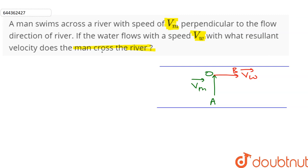Then the question asks, what is the resultant velocity with which the man crosses the river? The resultant velocity will be the resultant of these two vectors, which will be vector AB.